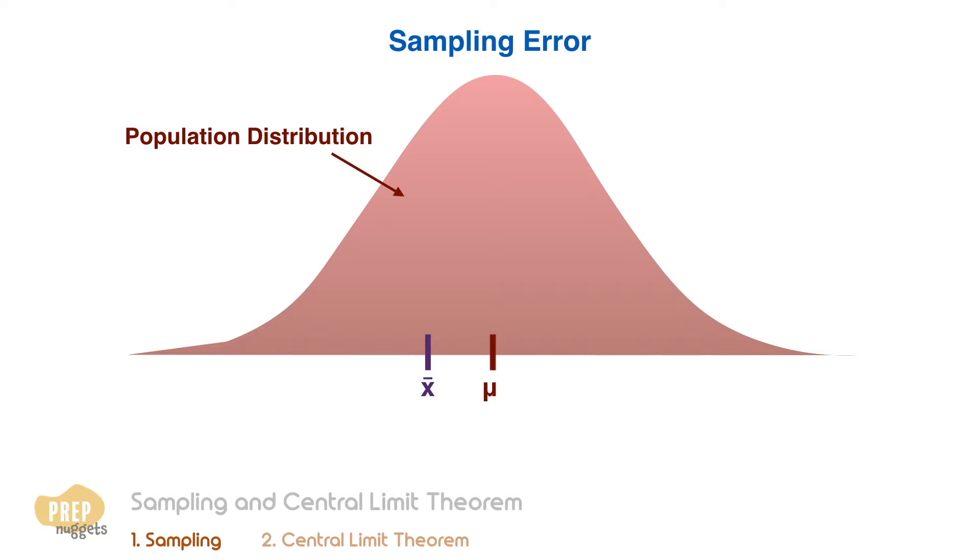Now if we take another random sample from the population, chances are we'll get a different sample mean and standard deviation. Repeat this process many times until all possible combinations are exhausted and we find that the sample statistic itself is a random variable. It has a probability distribution, and we call this the sampling distribution.